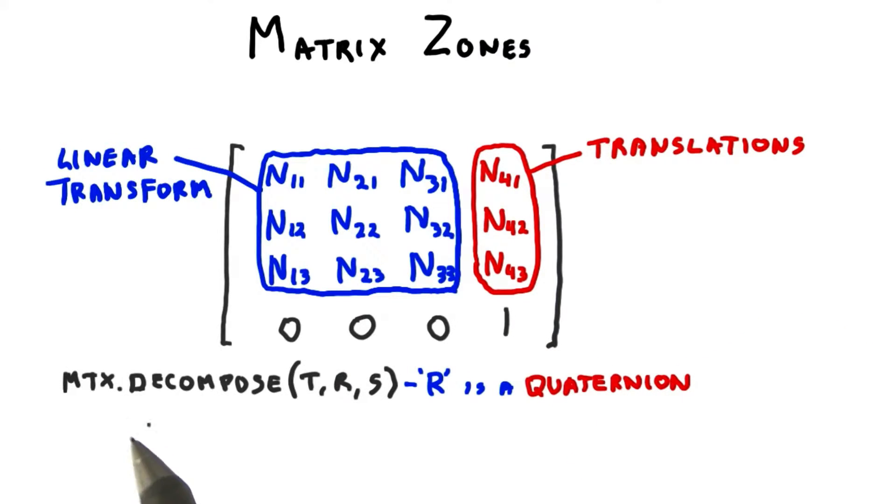3JS provides a function called decompose to extract the translation, rotation, and scale components from a matrix. The translation and scale factors come back as vectors, as you might expect.